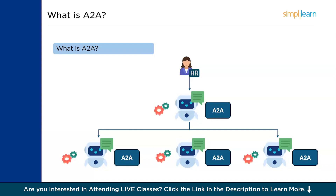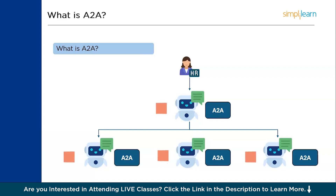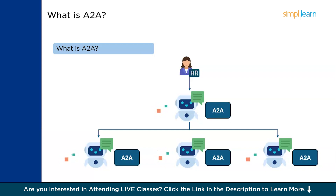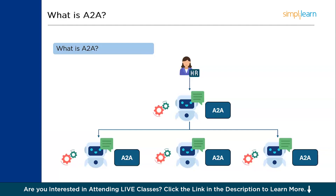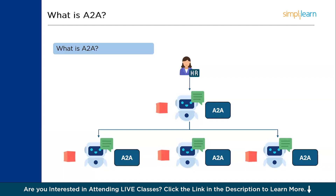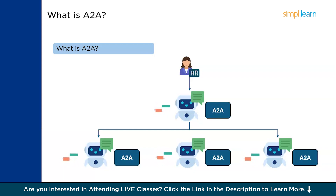Basically, A2A creates a unified standard pipeline to get the task done. It might sound similar to MCP — a tutorial on MCP is linked in the description. MCP and A2A work hand in hand; they focus on enhancing each other's capabilities. Think of A2A as an add-on to MCP.